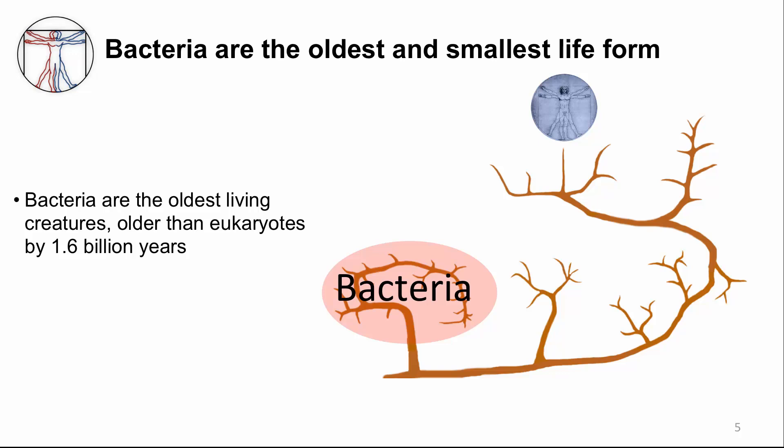Bacteria are the oldest and smallest life form if we look at a tree of life. They are the first life form to branch out from our most ancient common ancestor, meaning they arose over one and a half billion years ago, even before archaea, another type of prokaryote.